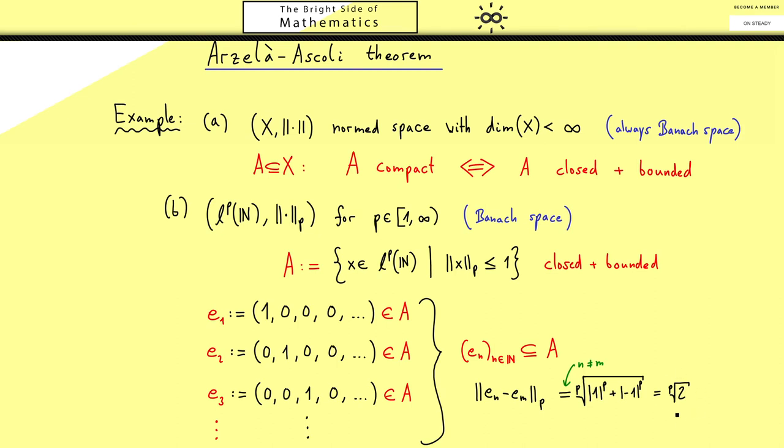This means that going to a subsequence won't change that you always have the same distance between two members. It does not matter which value this number has exactly, it's greater than zero and it's the same number for all nm. So we conclude we can't find a convergent subsequence. Therefore the closed unit ball in this Banach space is not compact. Indeed with a similar argument you can show for Banach spaces the closed unit ball is compact if and only if the Banach space is finite dimensional.